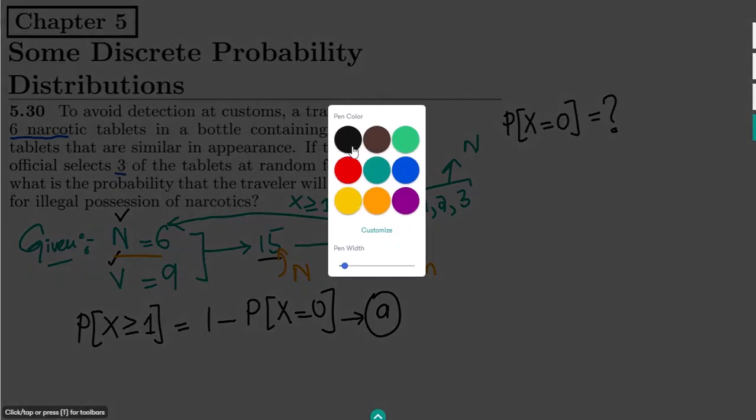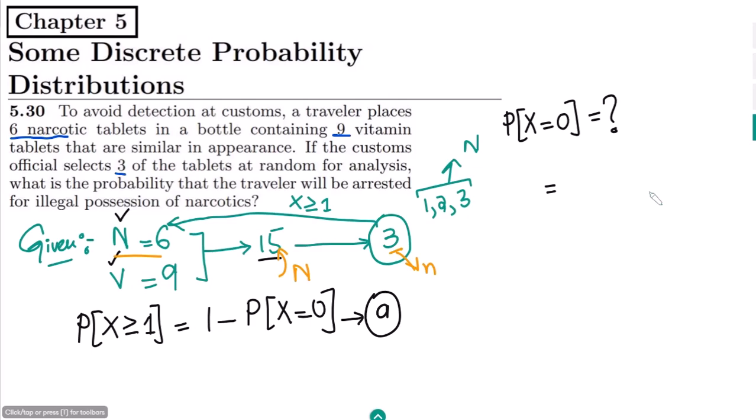For that we have to do what? We will have all the items here which would be N choose small n, so those would be out of 15, three are selected. Similarly, from the narcotics which are six, none is selected, and from the vitamins which are nine, all three are selected.